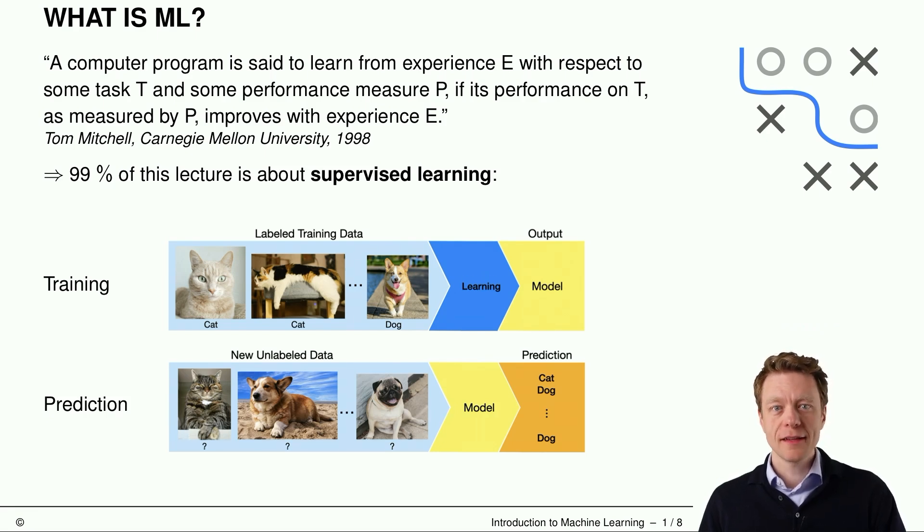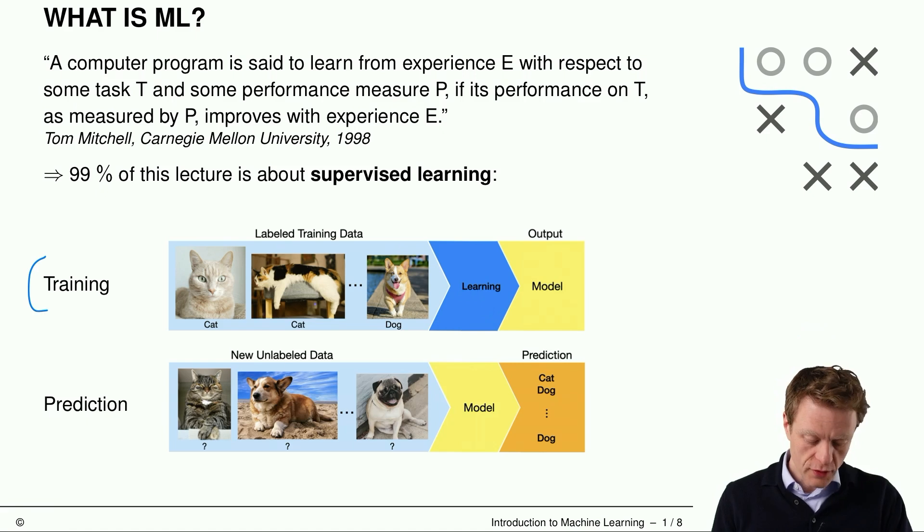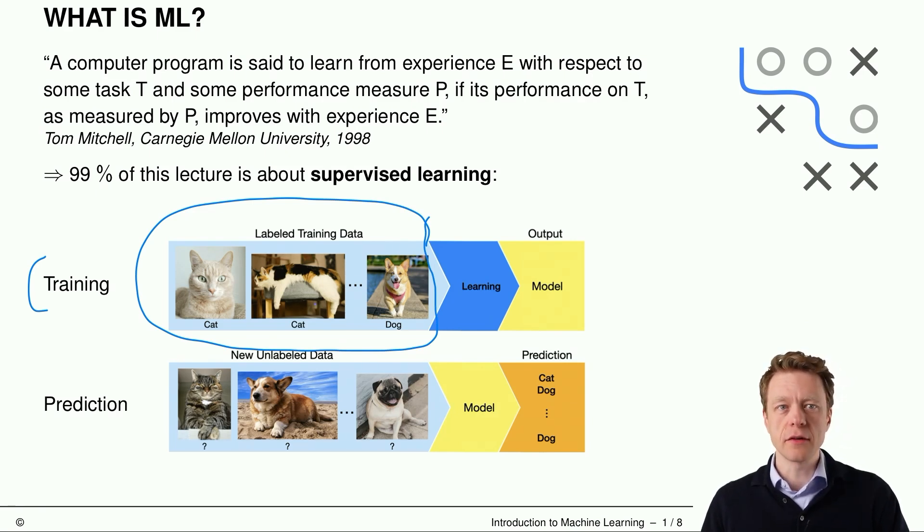Let's start with an example of what machine learning tries to do. So we start with some training data. These labelled training data in this case are images of cats and dogs. And we want to learn a model which tells us for a new image if the thing that we see on that image is a cat or a dog.